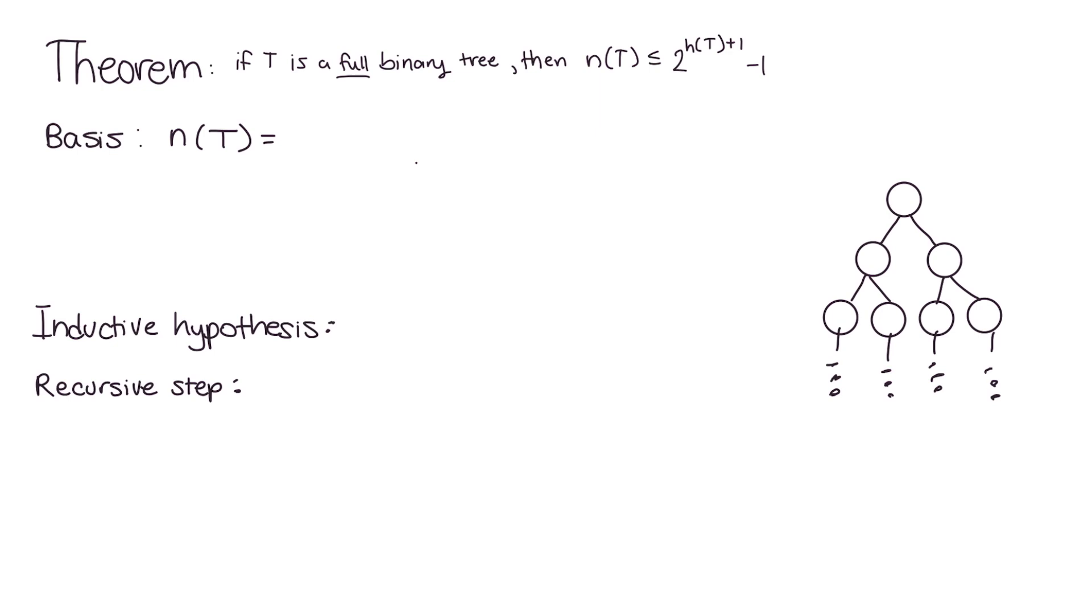So, base case, remember, we're proving for the smallest possible case. And that's only if there's one node in the tree. Like this. And then, let's plug in. So, n(T) is 1, less than or equal to 2—the height is 0. We just simplify this statement as it's true. So we've proven our base case.